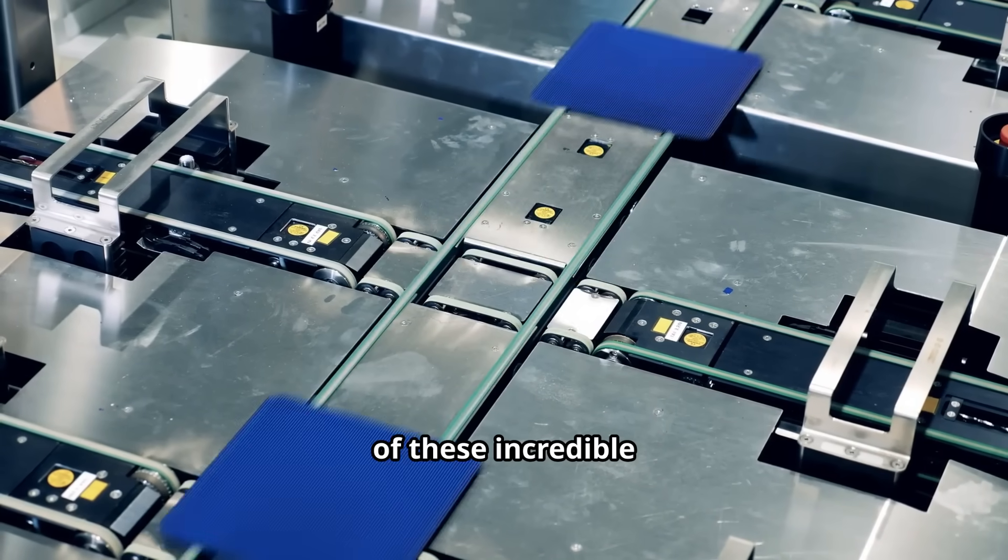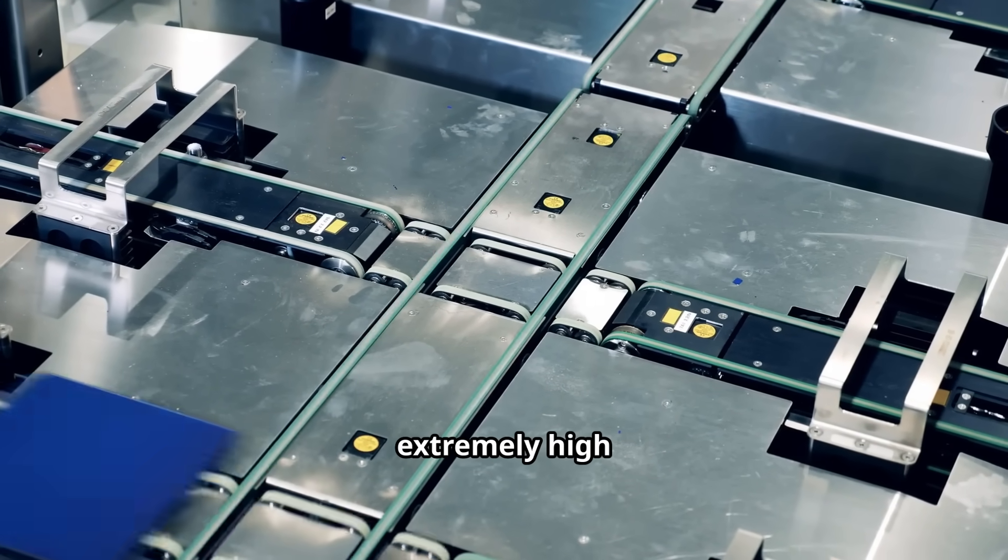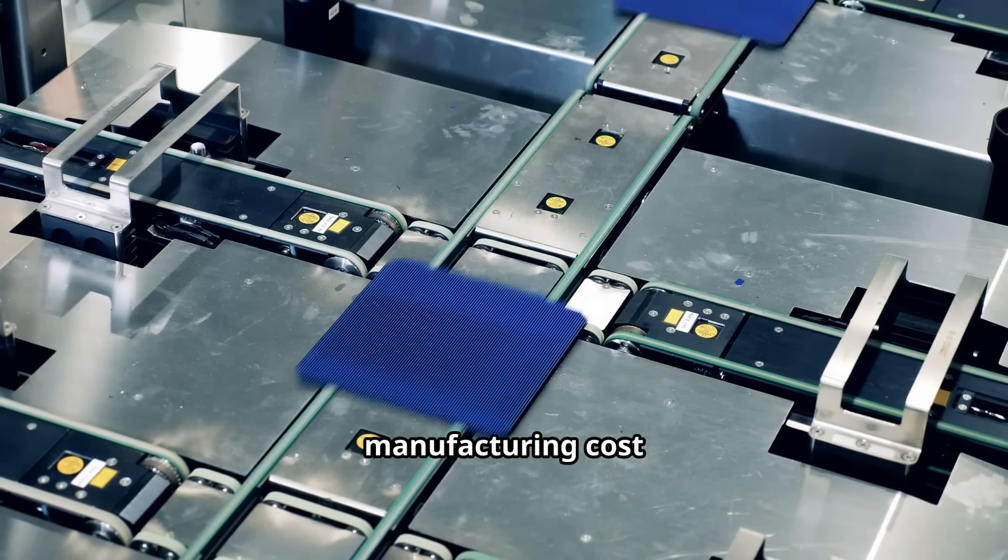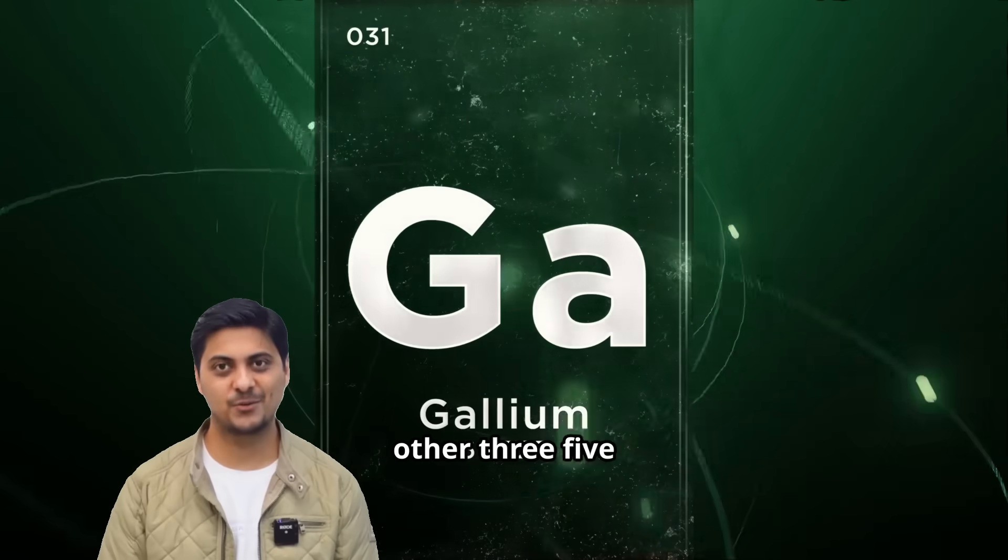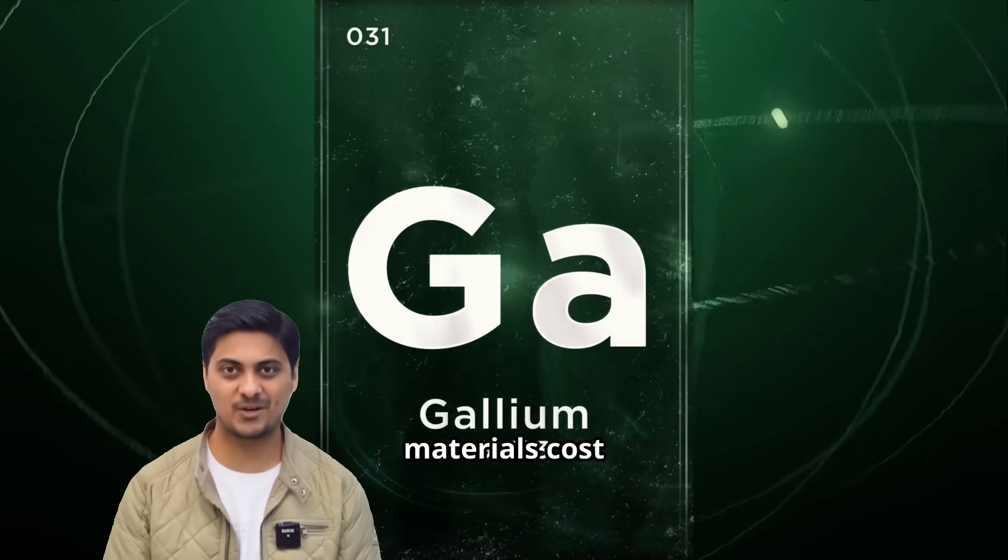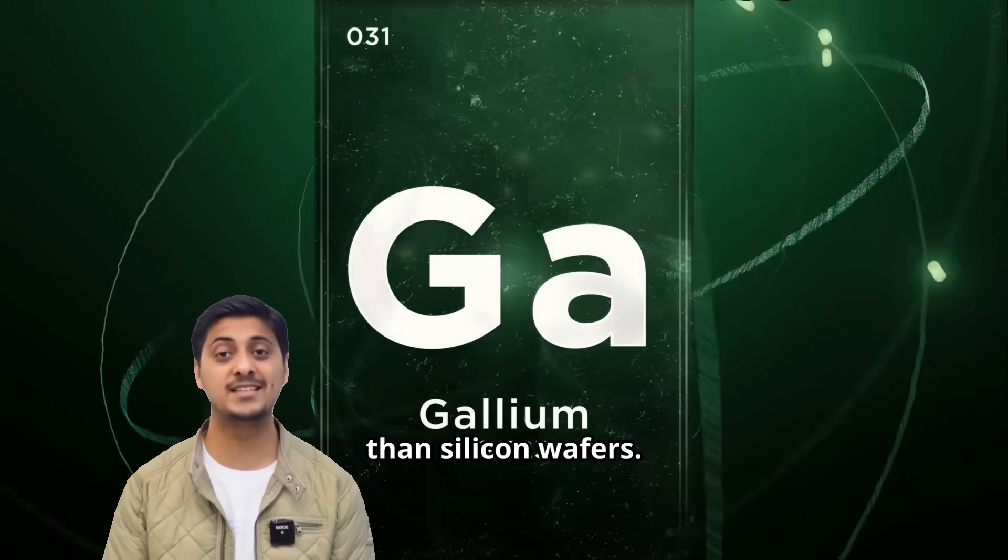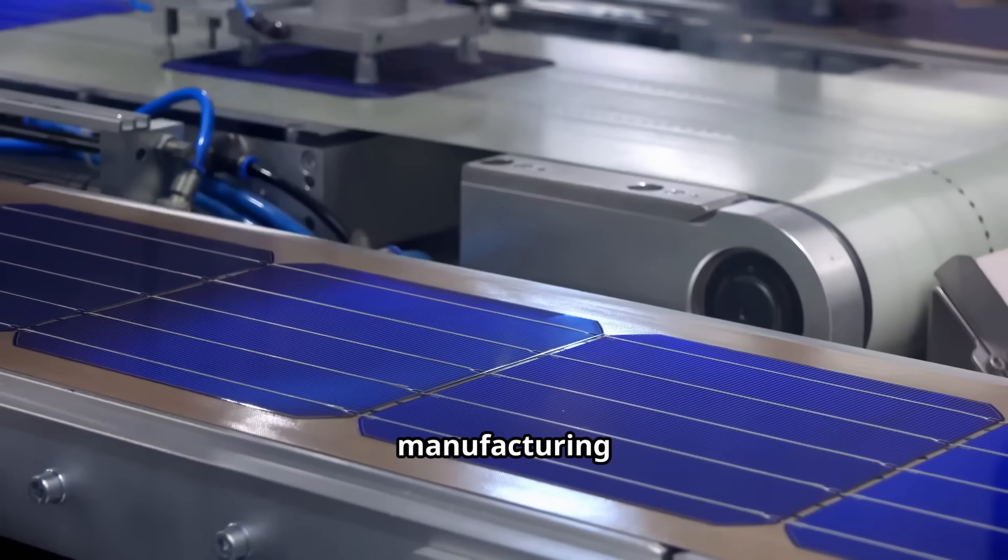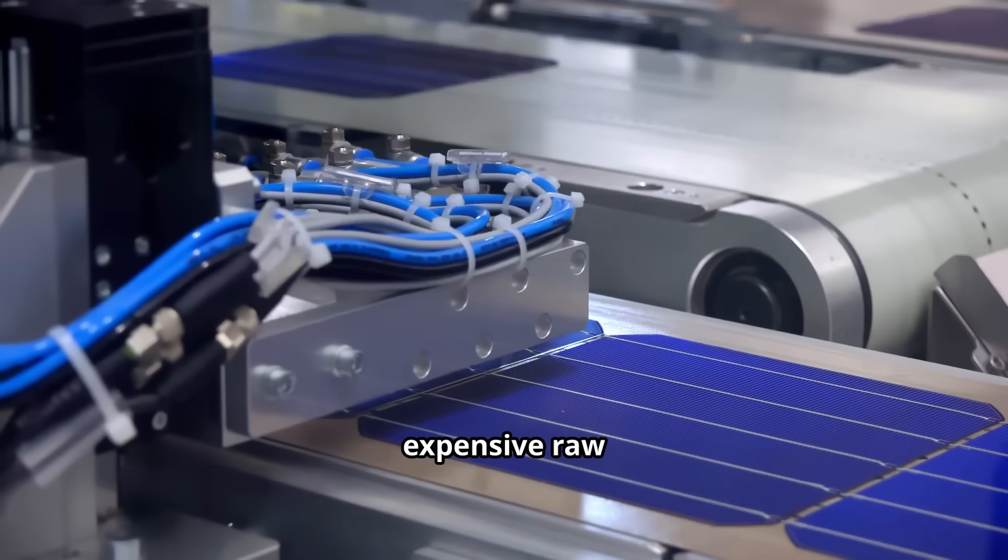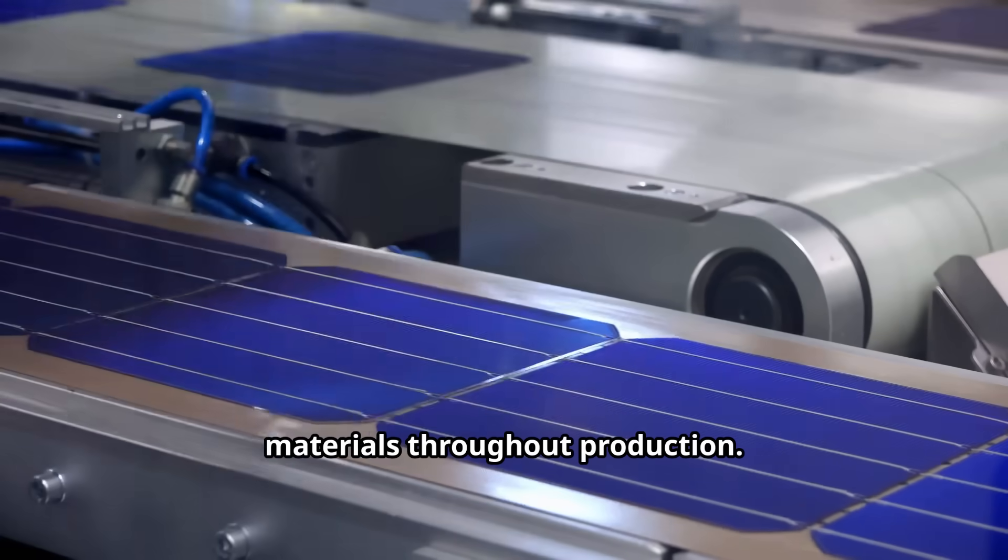The main limitation of these incredible cells is their extremely high manufacturing cost compared to silicon. Gallium arsenide and other 3-5 materials cost hundreds of times more than silicon wafers. These exotic semiconductor materials require sophisticated manufacturing processes and expensive raw materials throughout production.